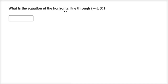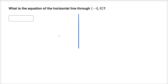What is the equation of the horizontal line through the point negative four comma six? So let's just visualize this. Once you get the hang of it, you might not have to draw a graph, but for explanatory purposes it might be useful. Negative four comma six — that's going to be in the second quadrant.